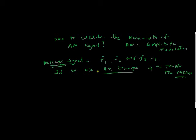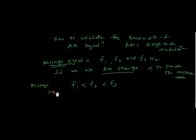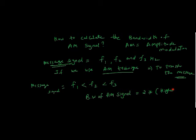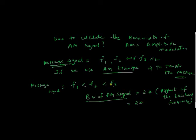Suppose we have three frequencies f1, f2, and f3 such that f1 is less than f2 less than f3. This is our message signal. The bandwidth of the AM signal will be two times the highest of the base band frequency. In this case, the bandwidth of my AM signal will be two times f3, which is the highest frequency here. This is the bandwidth of my AM signal.